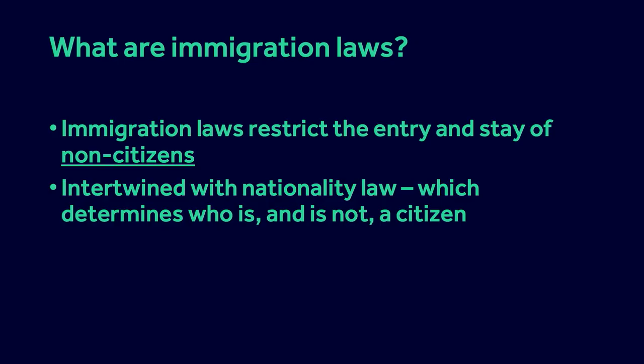Before we talk about the history of British immigration laws, I'd like to define what we mean by immigration laws. Immigration laws are laws which restrict the entry and stay of non-citizens. Generally speaking, in international law, countries can't restrict the entry and stay of their own citizens, although there are some important exceptions we will be discussing later. So immigration law is intertwined with nationality law. In general, if you're a citizen, you have the right to live in the country and you're not subject to the immigration laws of the country where you are from. Whereas if you are a non-citizen, you are subject to immigration laws and you need permission to enter and stay.